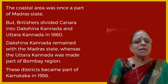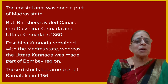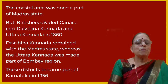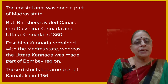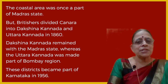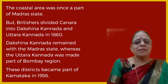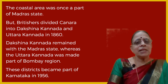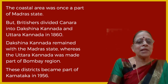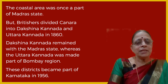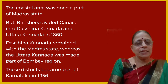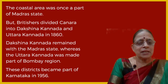The coastal area was once a part of Madras state. The British divided Kenara into Dakshinakannada and Uttarakannada in the year 1860 for the purpose of administration. Dakshinakannada remained with the Madras state, whereas Uttarakannada was made a part of the Bombay region. These districts became a part of Karnataka in 1957.